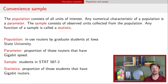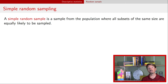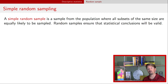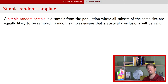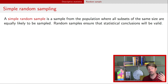One way to get a representative sample is through random sampling — specifically, simple random sampling. A simple random sample is one where all subsets of the desired size are equally likely to be selected. Random sampling ensures that the statistical conclusions we want to make are valid. More sophisticated methods like stratified random sampling also exist, but the mathematics get more complicated, so for this course we'll focus on simple random samples.